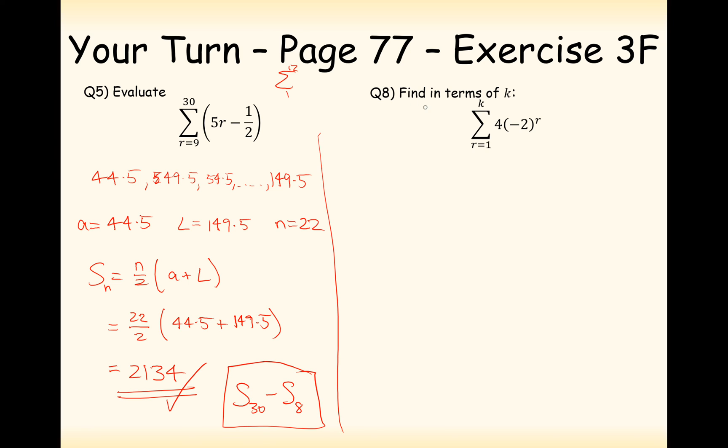For part 8 here, we're going to solve this question in terms of K. In this question here, substituting in R equals 1, we're going to get minus 8. So minus 8 is going to be our first term, and then it's going to be times by minus 2 each time. So when I type in 2 here, I'm going to get 4 times minus 4, which is 16. So my common ratio here is minus 2, and my starting term is minus 8.